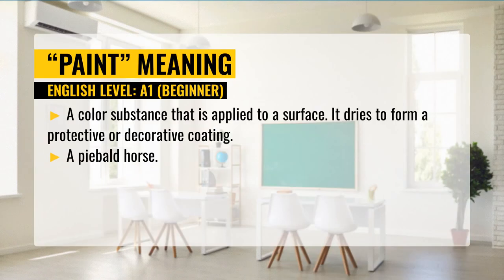Meaning of paint. The first definition: a color substance that is applied to a surface. It dries to form a protective or decorative coating.